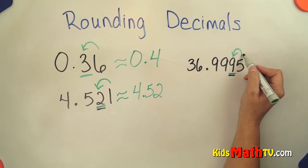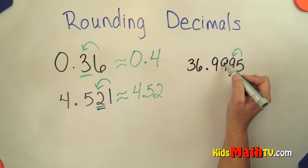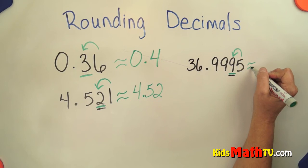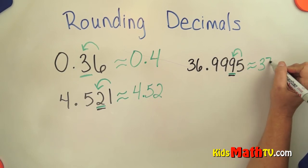So in this case, this 5 tells this 9 to go up 1 to 10, which makes this go up to a 10, which makes this go up to a 10, which makes this go up to a 10, which makes that go up to a 7. So this actually rounds to 37 and 0 thousandths.